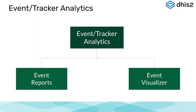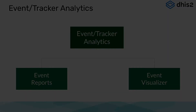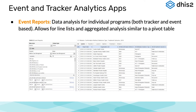Switching to the analytic side of the system, there are a number of different ways to view event and tracker program data. The two new apps you will be familiarizing yourself with in this course are the Event Reports and the Event Visualizer apps. The Event Reports app allows you to create pivot tables or line lists based on event or tracker data. The pivot tables give you an aggregated number of events, and the line lists allow you to make searches or queries for events based on a set of criteria that you specify.